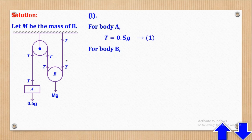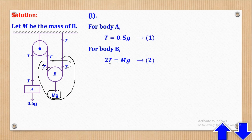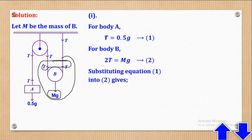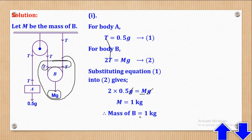For body B, upward forces are T + T = 2T, equal to Mg. So 2T = Mg. We now have two equations and two unknowns. Substituting equation 1 into equation 2: 2(0.5g) = Mg. The g cancels, and we find M = 1kg. Therefore the mass of B is 1kg.